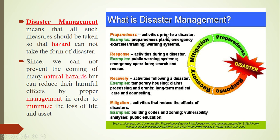The disaster management cycle comprises four stages: preparedness, response, recovery, and mitigation. Preparedness includes activities prior to a disaster such as preparedness plans, emergency exercises, training, and warning systems. Response includes activities during a disaster such as public warning systems, emergency operations, and search and rescue. Recovery includes activities following a disaster such as temporary housing, claims processing, grants, and long-term medical care and counseling. Mitigation includes activities that reduce the effect of disasters, such as building codes and zoning, vulnerability analysis, and public education.